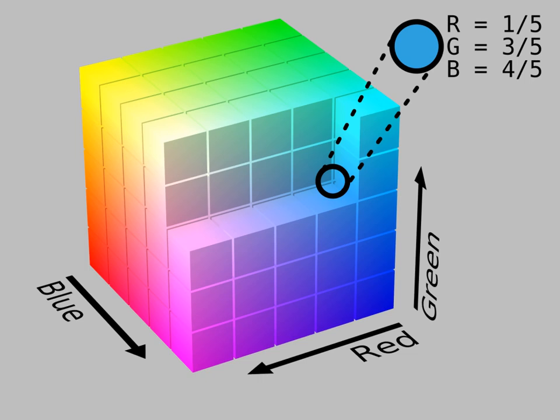RGB spaces are generally specified by defining three primary colors and a white point. In the table below the three primary colors and white points for various RGB spaces are given. The primary colors are specified in terms of their CIE 1931 color space chromaticity coordinates.